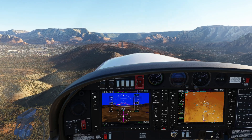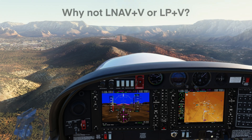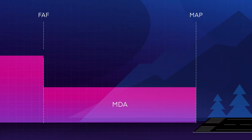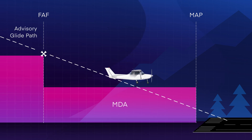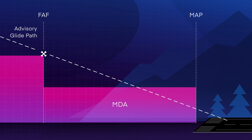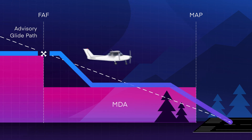You might be wondering why we didn't include LNAV plus V or LP plus V — well, they actually aren't approach types. If we're flying an LNAV or LP approach using a WAAS receiver, it might show an advisory vertical glide path, providing a constant rate stabilized descent to minimums. But remember, it's advisory only and not officially part of the approach. It does not provide obstacle protection below the MDA and could take us below step-down altitudes. It's up to us to ensure we don't bust minimums.